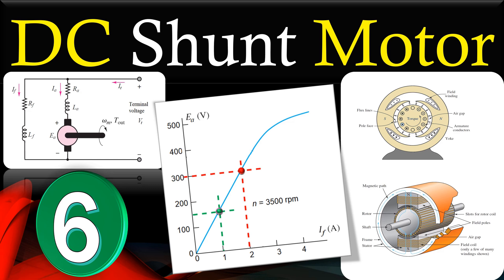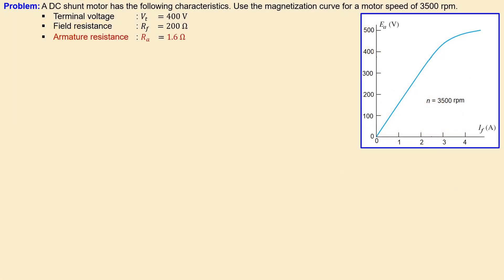Hi everyone and welcome to a new video about DC shunt motor. This is example number six. In this example I will discuss the situation where we have a characteristic curve of a motor and from there we will calculate the required values. We have the DC shunt motor with the following characteristics: terminal voltage, field resistance, and armature resistance are given. In addition, we have the magnetization curve for a motor speed of 3500 RPM.